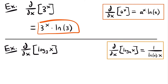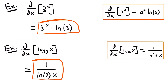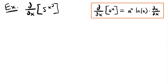Our second example: the derivative of log base 3 of x. The derivative of log base a of x equals 1 divided by the natural log of a times x. In this case a equals 3, so this equals 1 divided by the natural log of 3 times x. That is the derivative of this logarithmic function with a base of 3.